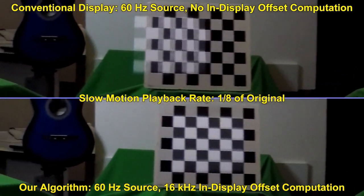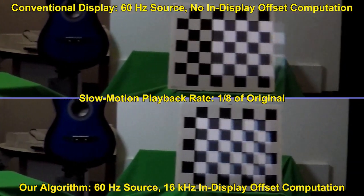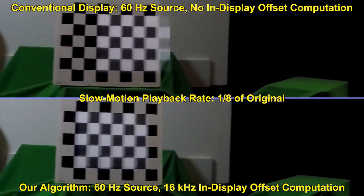Here are both at the same time. Note also that our algorithm inherently provides some motion blur matched to the physical object, while the conventional display continues to show jumpy frozen poses.